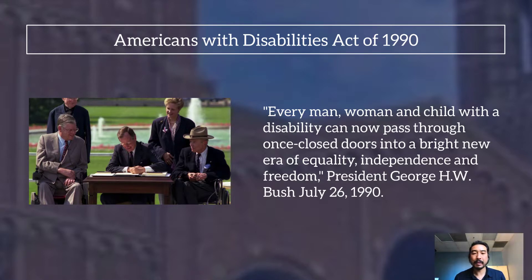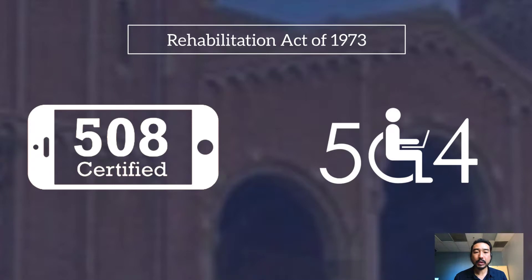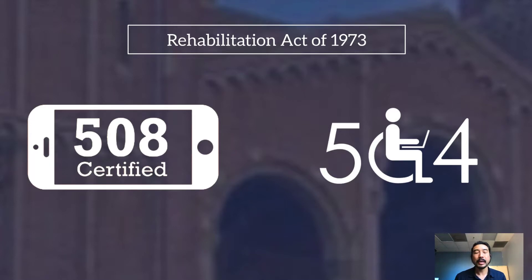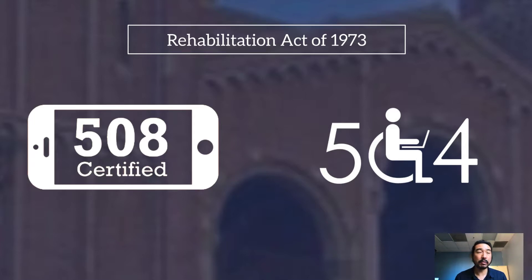That's a very powerful message, and alongside him is Justin Dart — Justin Whitlock Dart — one of the civil rights heroes for disability. Next we have the Rehabilitation Act of 1973, a federal law that applies to any agency that receives federal funding, including our campus and most universities. Two laws apply here: the first is Section 508, which gives specific guidance on information technology to make it accessible, very similar to the WCAG 2.1. This standard has been adopted by a number of Western European countries as well as Australia and New Zealand.